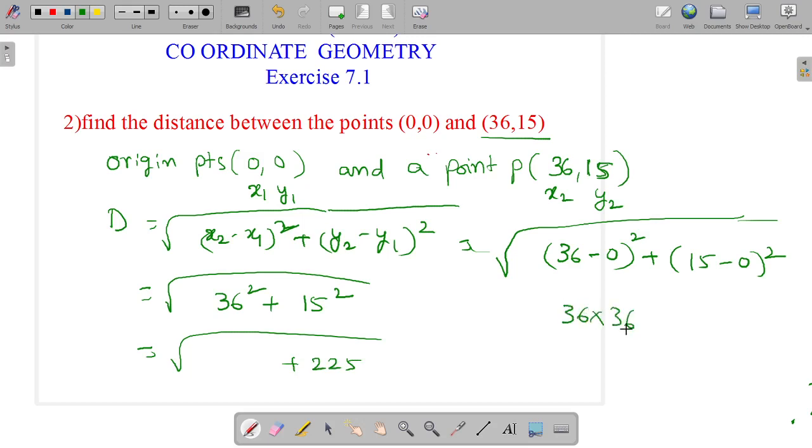Computing 36 into 36, working through the multiplication steps: 36 times 36 equals 1296. So 1296 plus 225.